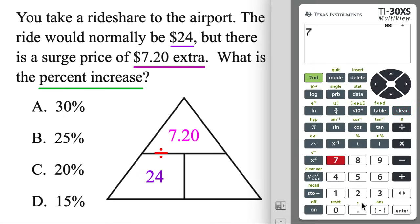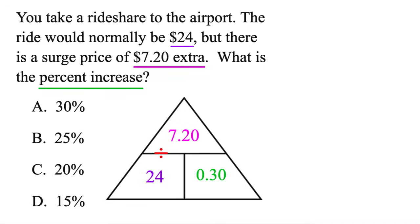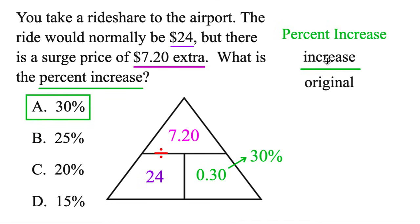Once again, let's use the calculator. $7.20 divided by $24, 0.3. But that's the same thing as 0.30, so 30 cents or 30% there. So that's the percent increase for this problem. Now you may notice in textbooks they actually give a separate formula for percent increase. It's just the increase divided by the original. And you're welcome to use this formula, but the triangle ended up doing that same thing here.